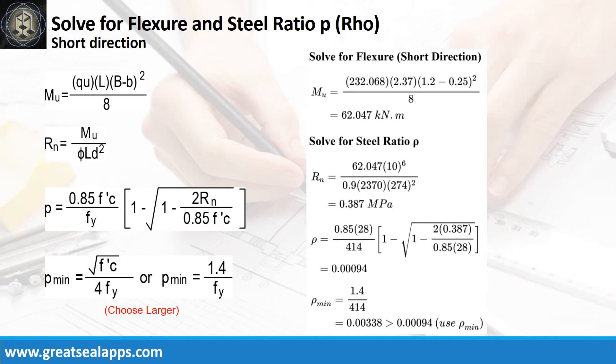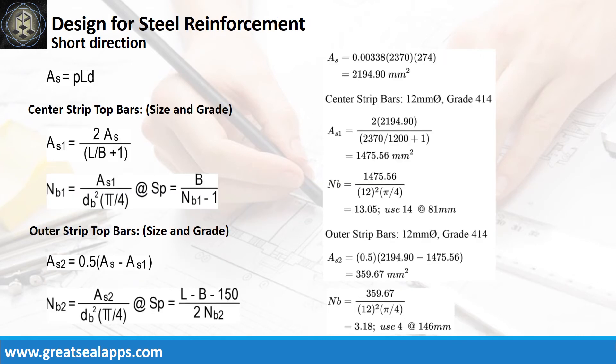Use rho minimum of 0.00338. Continuing at short direction: given rho equals 0.00338, L equals 2,370 mm, and D equals 274 mm. The area of steel for short direction bar is 2,194.9 sq mm. The area of steel at center strip is 1,475.5 sq mm, and the number of bars for 12 mm bar is 14. The area of steel at outer strip is 359.67 sq mm, and the number of bars for 12 mm bar is 4 on each side.